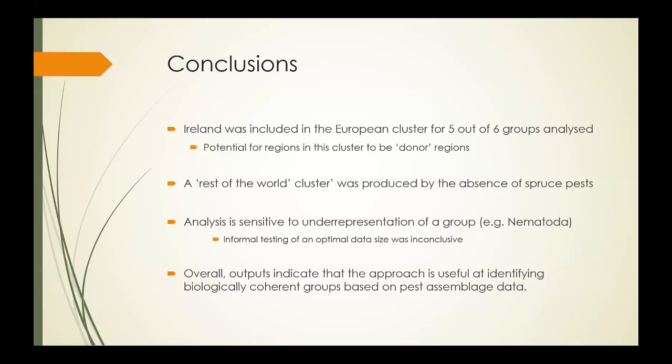For each group, the amount of species data required for the clusters to stabilize or remain relatively unchanged changed depending on what group I was examining. This really suggested that the size of the dataset is less important than the data it contains. This just highlights again the importance of reliable available data if this sort of approach is to be truly useful. Overall, the outputs indicate the approach is useful for identifying biologically coherent groups based on pest assemblage data. Hierarchical clustering can be used for prioritizing species for evaluation as potential alien pests to Sitka spruce in Ireland or for other target regions. Thank you. Questions or comments?